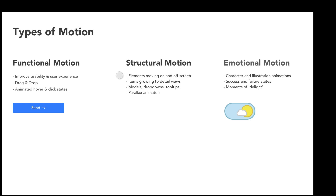Then we get into structural motion, which was really made popular by Google's Material Design. They use animation effectively to illustrate an app's structure — elements moving on and off screen, items growing into detail views, modals, dropdowns, tooltips.